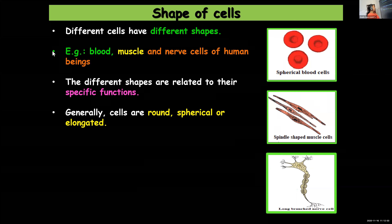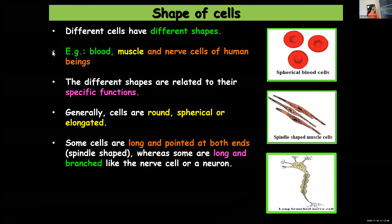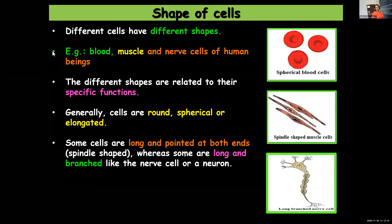Generally the cells will be round, spherical, or elongated. Some cells can be long and pointed at both ends, as in the case of muscle cells, and some can be long and branched, as in the case of a neuron or nerve cell.